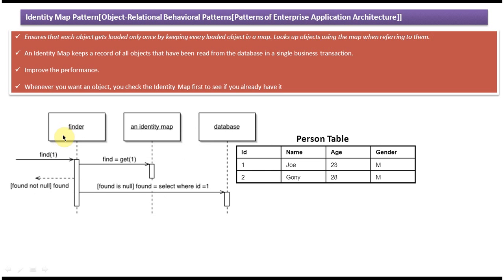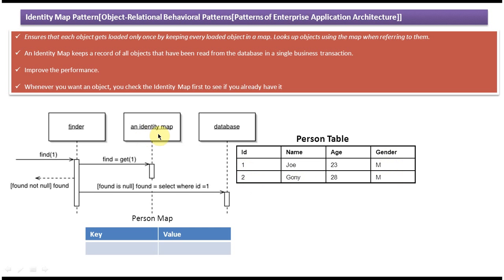Here you can see three components: Finder, Identity Map, and Database. In the database there is a person table with four columns — ID, name, age, and gender. The first row represents Joe's person information and the second row represents Goni's person information. We will take the person map as our identity map.